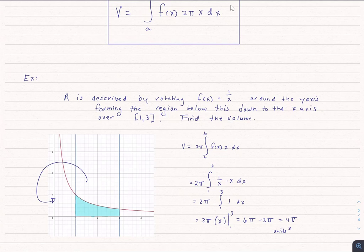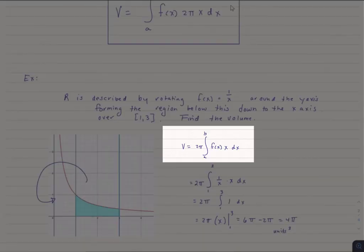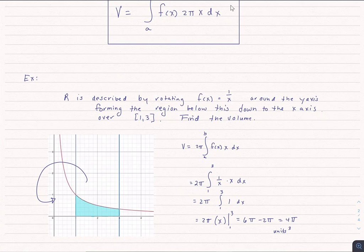We graph the line, get an idea of what it looks like, know that we're going to be rotating around the y-axis. So we're going to do this by method of shells. The volume is equal to 2 pi times the integral from a to b f of x times x dx. In this case, f of x is 1 over x.